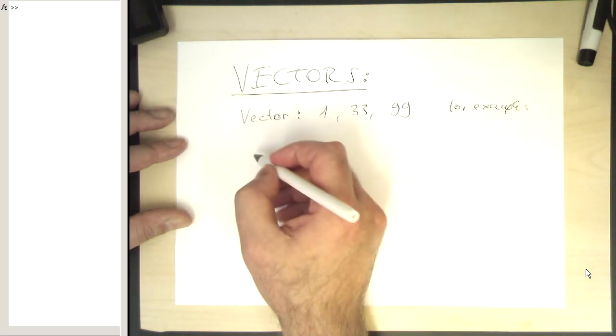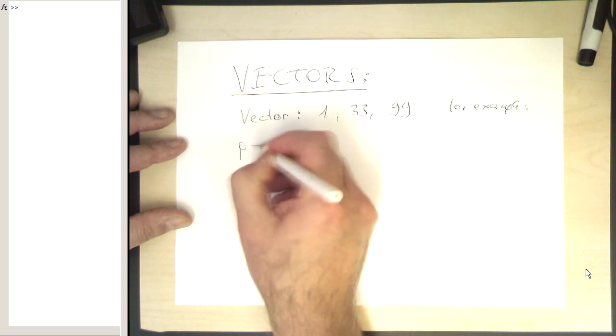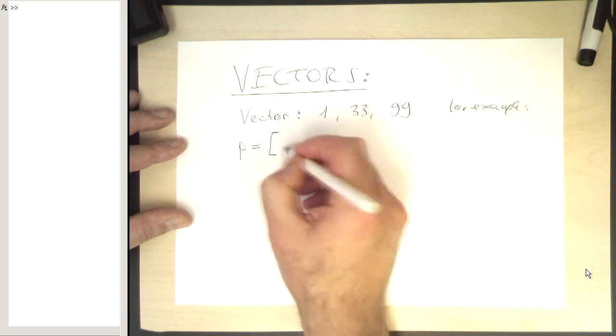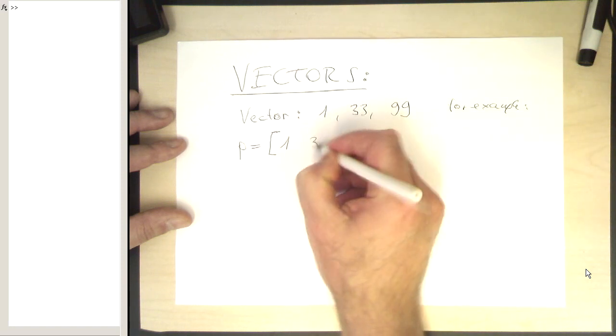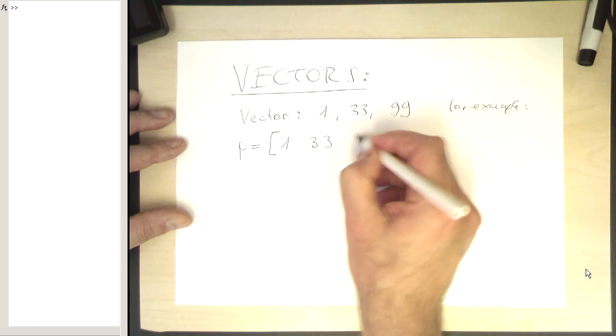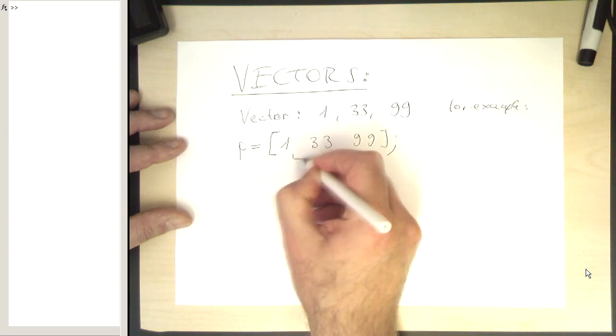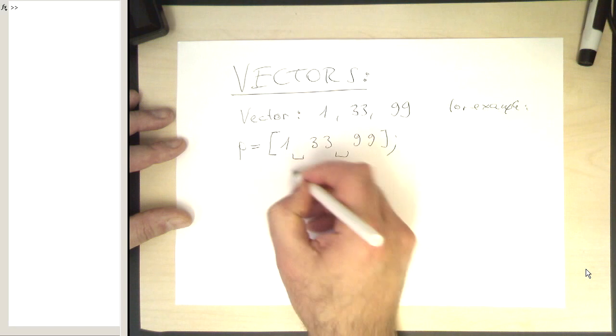Then in MATLAB, what we do is we write this vector in square brackets with 1, 33, and then 99, semicolon, and these are spaces here. So that's a space.